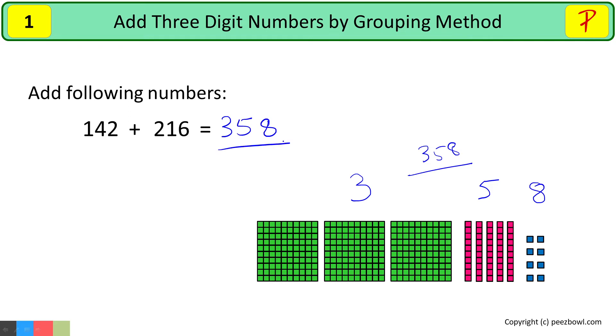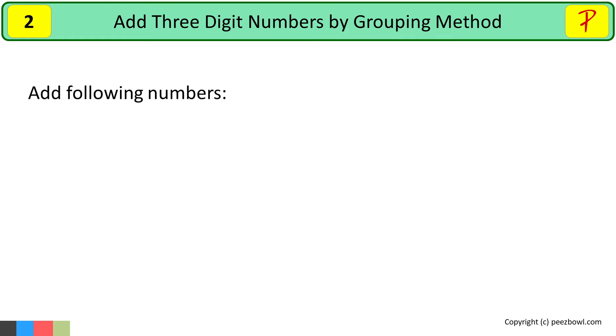Hope you understood this concept. I will take one more example. Let us add 237 and 125. In this case as well, let us show these two numbers in terms of hundreds, tens and ones. We show number 237 like this.